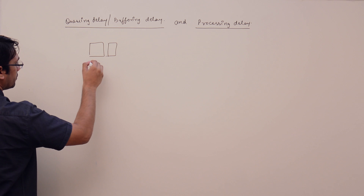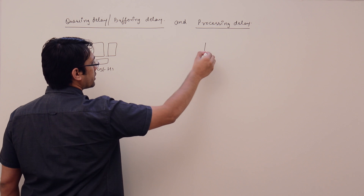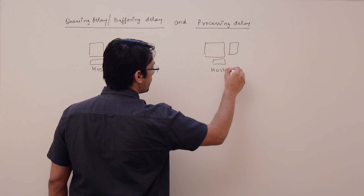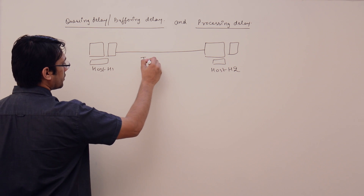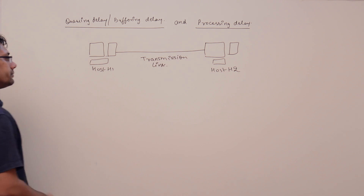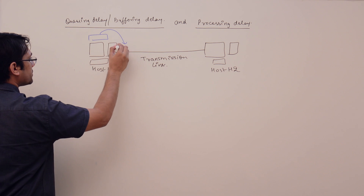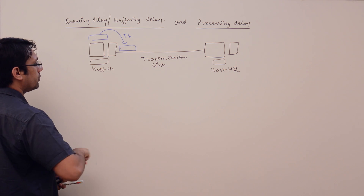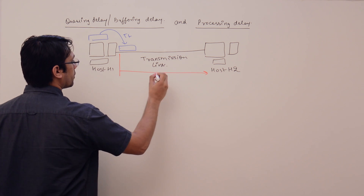Assume this is host H1 and this is host H2, and this is a transmission media or transmission link between H1 and H2. We know that for H1, the time taken to place the packet onto the transmission link is the transmission time. The time for this packet to travel from H1 to H2 is the propagation delay, that is TP.